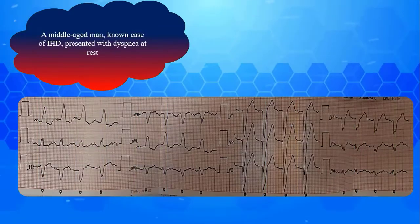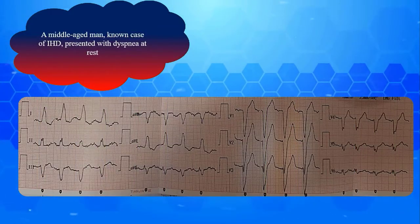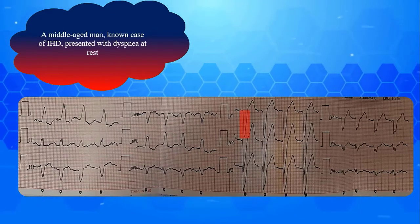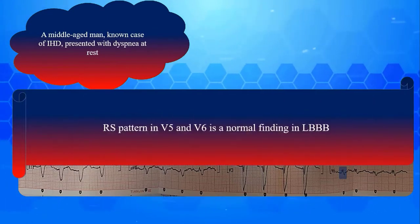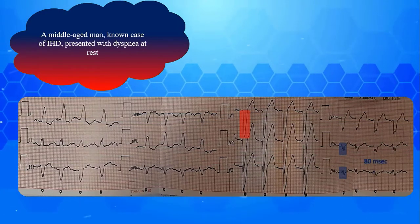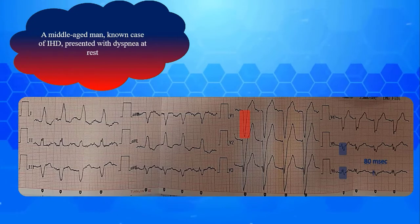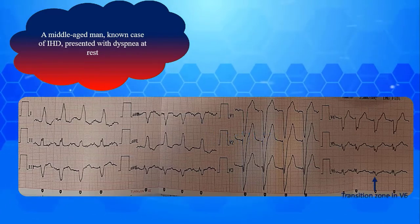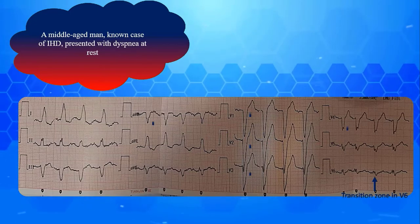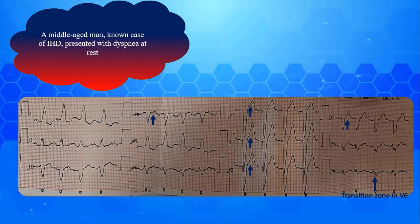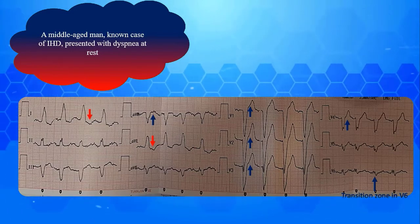The last example is a middle-aged man, known case of ischemic heart disease, presented with dyspnea at rest. The QRS complexes are clearly broad with deep S wave in V1 and RS pattern in V5 and V6 — recall that RS pattern in V5 and V6 is a normal finding in LBBB. No septal Q wave is observed in lateral leads. R peak time in lateral leads is obviously prolonged at about 80 milliseconds, confirming typical LBBB. Other associated findings are poor R wave progression and secondary STT wave changes. ST elevations with upright T waves in V1 to V4 and AVR are due to deep and broad S waves, while ST depressions and T wave inversions in D1 and AVL are due to dominant slurred R wave.